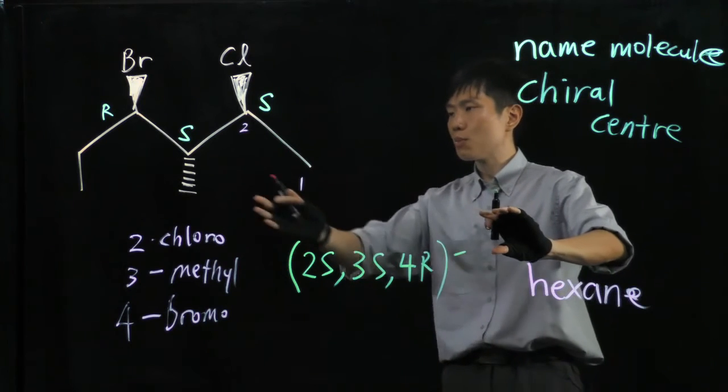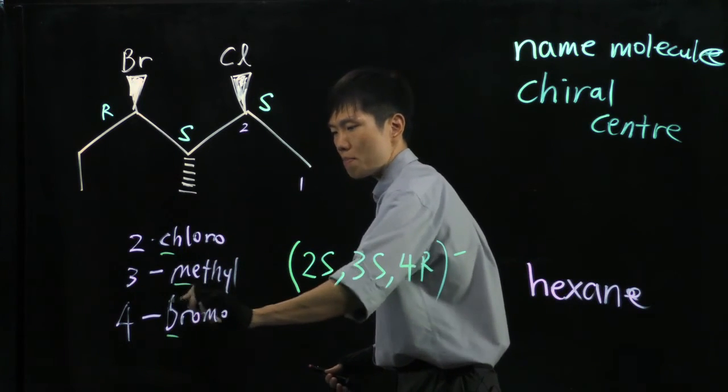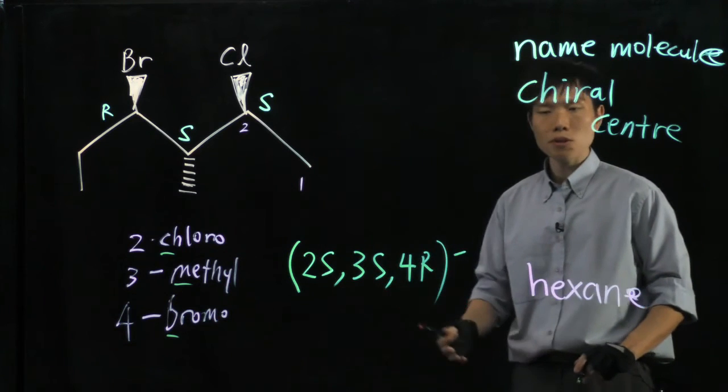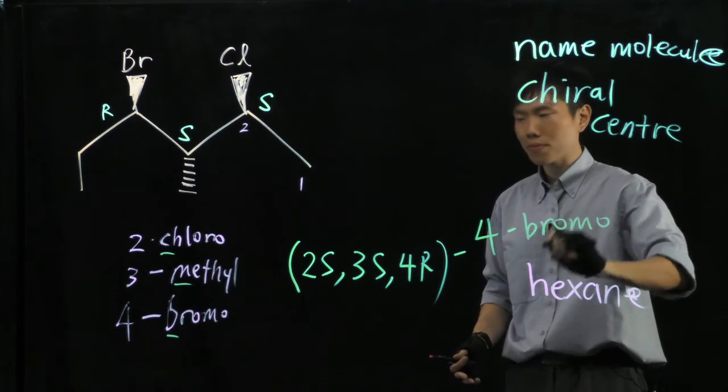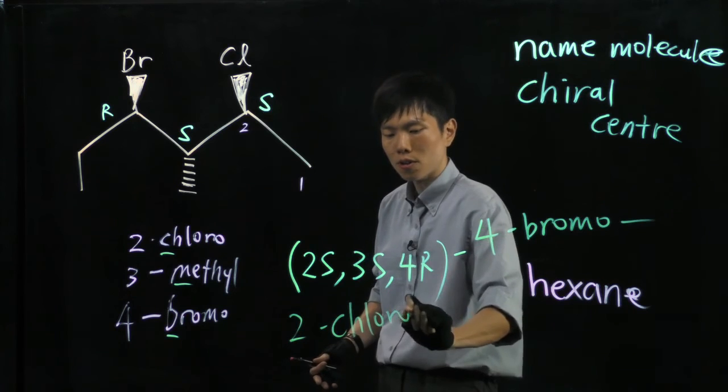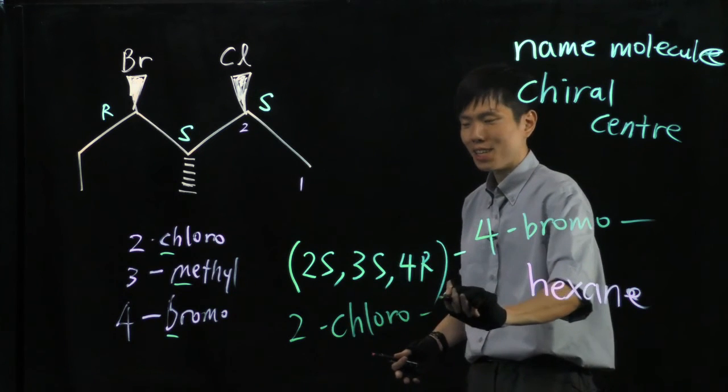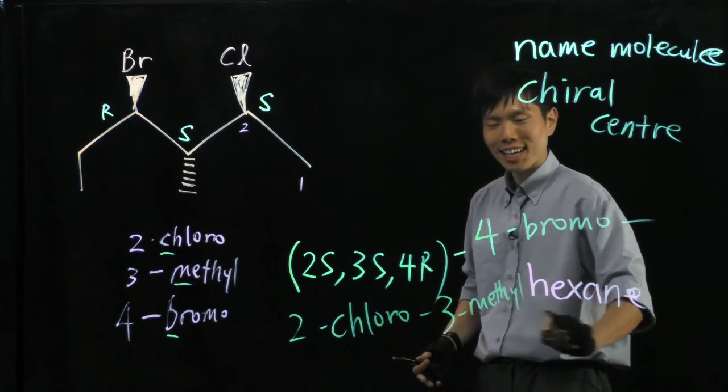I will insert my substituents. Again, we compare C, M, and B. Who goes first? 4-bromo, followed by 2-chloro, then 3-methyl hexane.